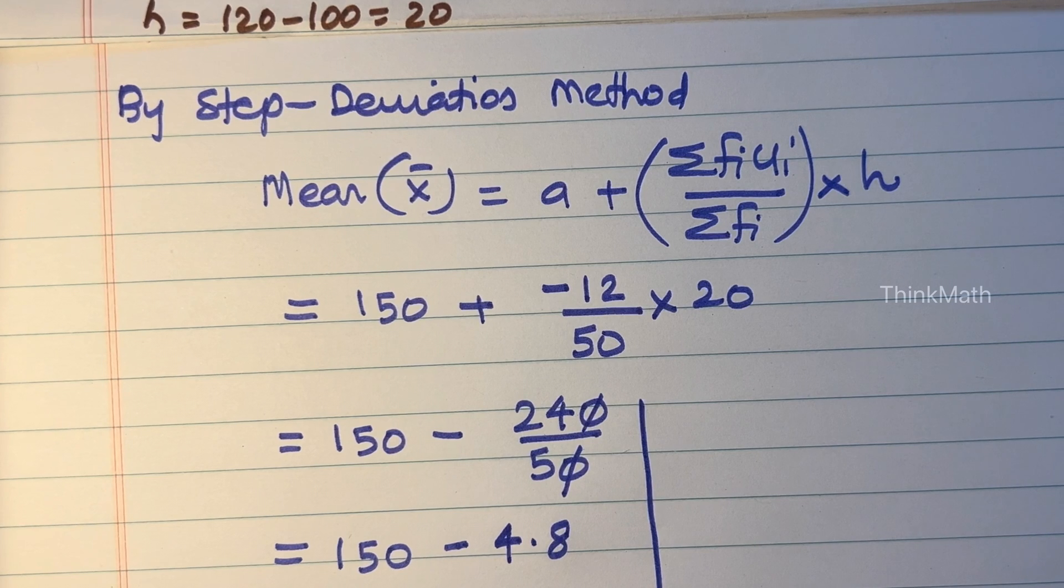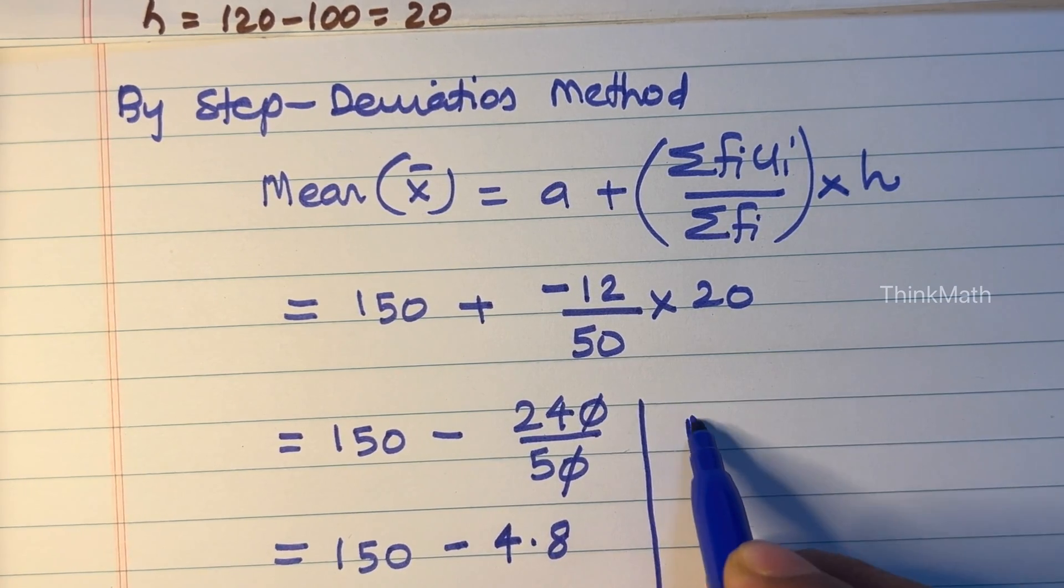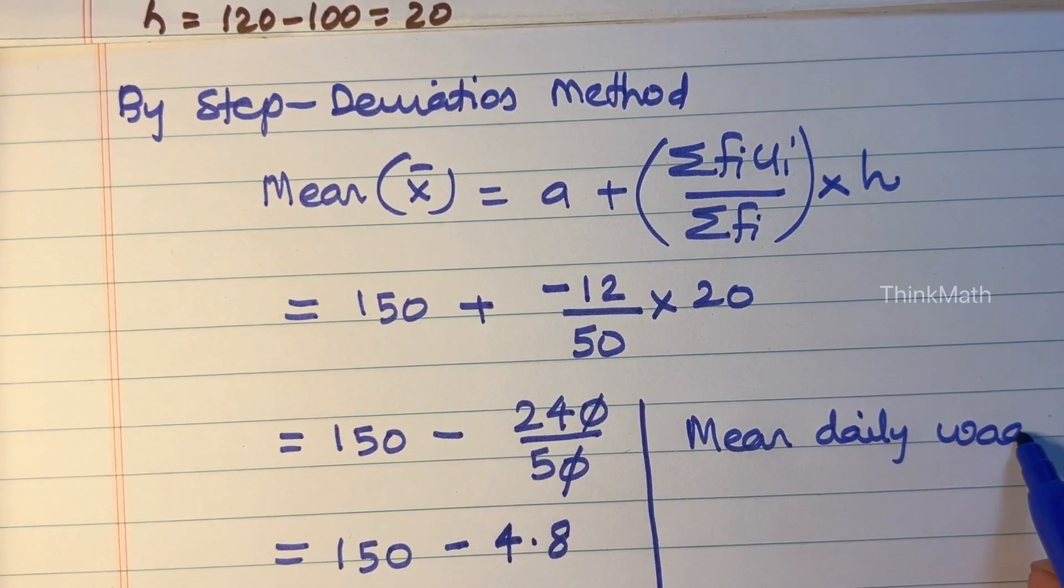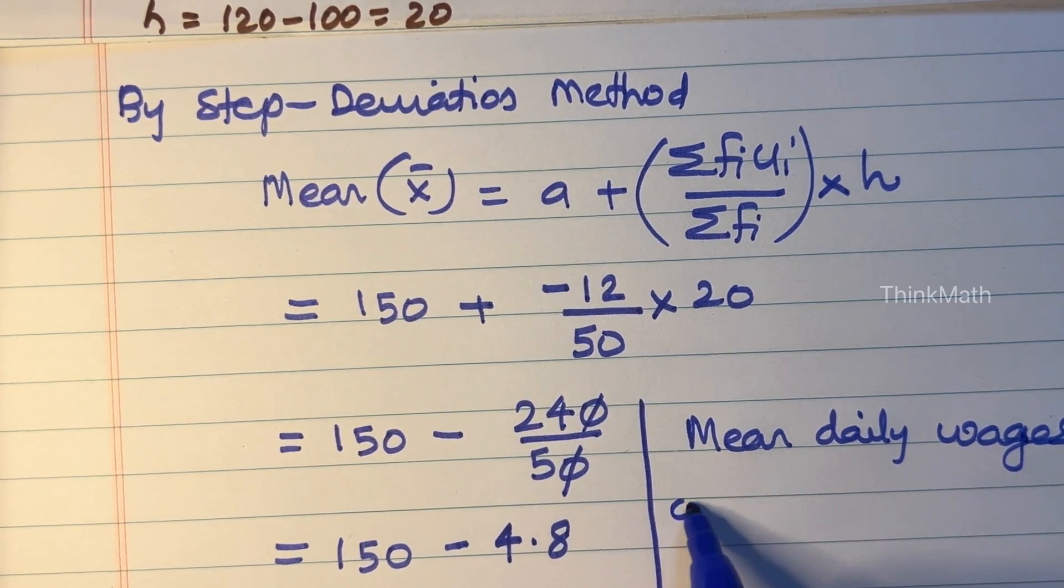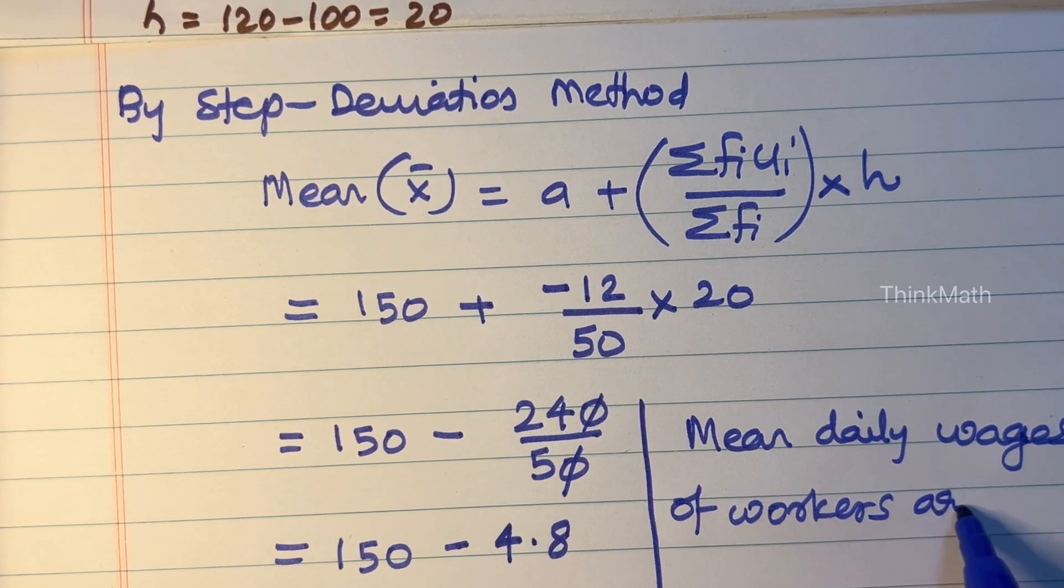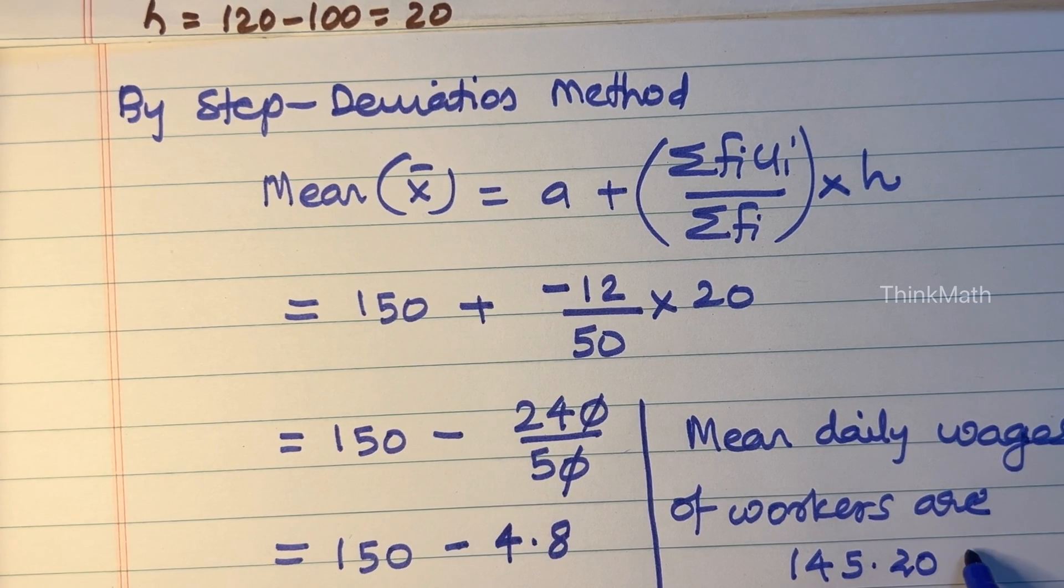Therefore, the final answer is, mean daily wages of the workers are 145.20 rupees.